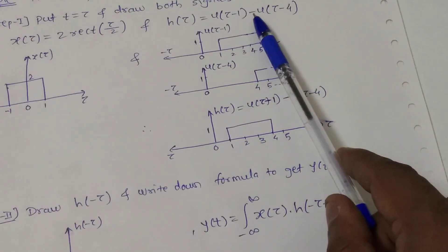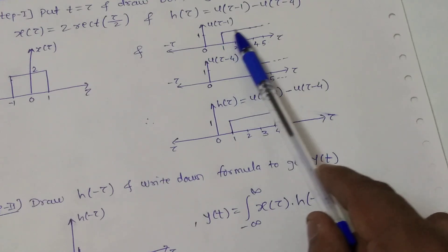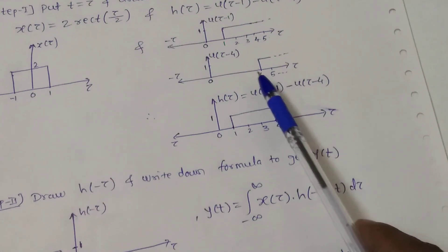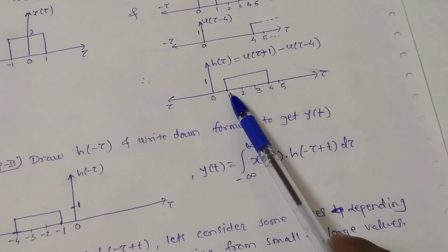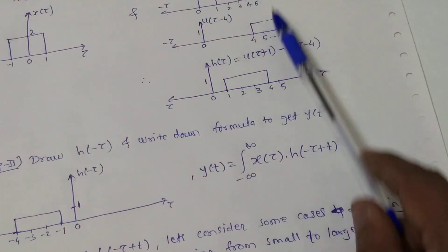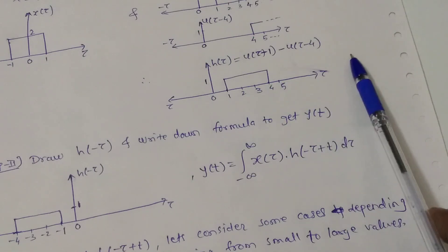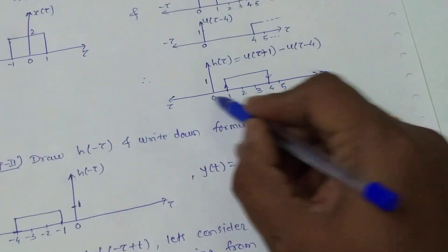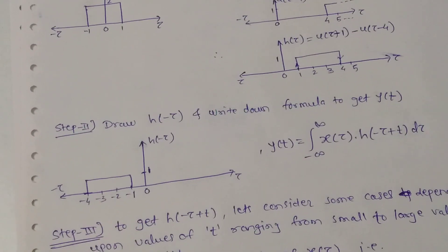Taking the subtraction of these two step signals: the first signal is present from 1 to infinity and the second starts from 4, so the subtraction gives h(τ) present from 1 to 4. After 4, both signals are present, so the subtraction gives 0. We get a rectangular pulse of width 3 for h(τ), with a rising edge and a falling edge.